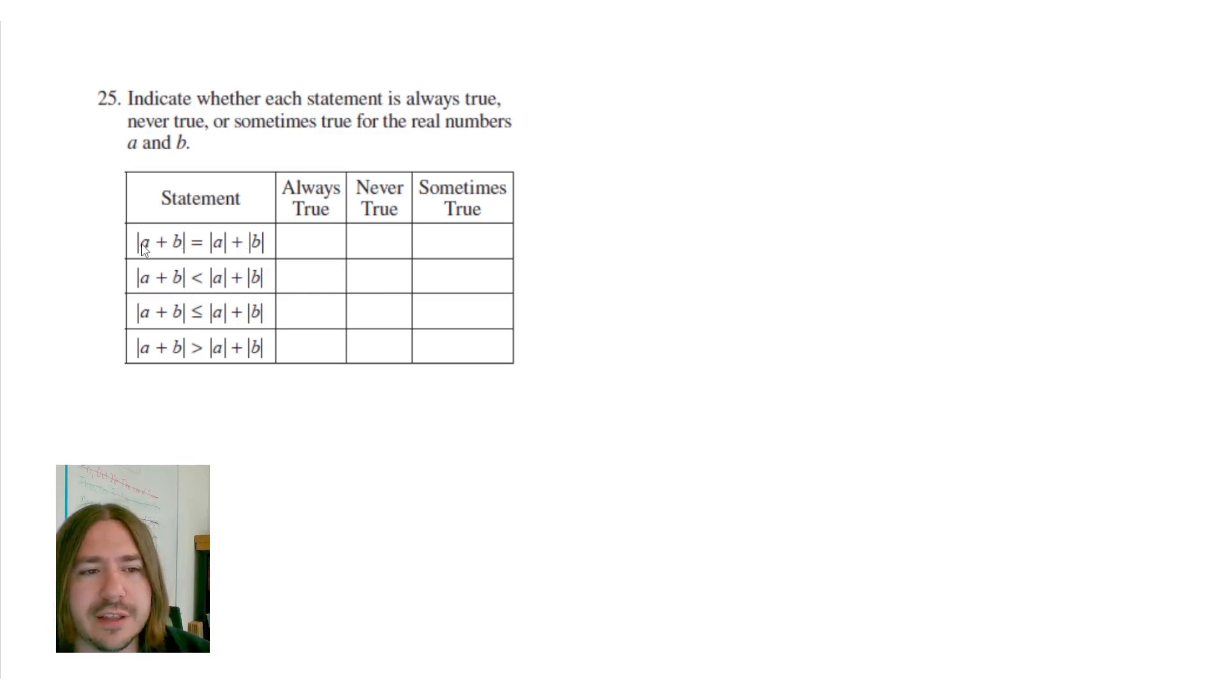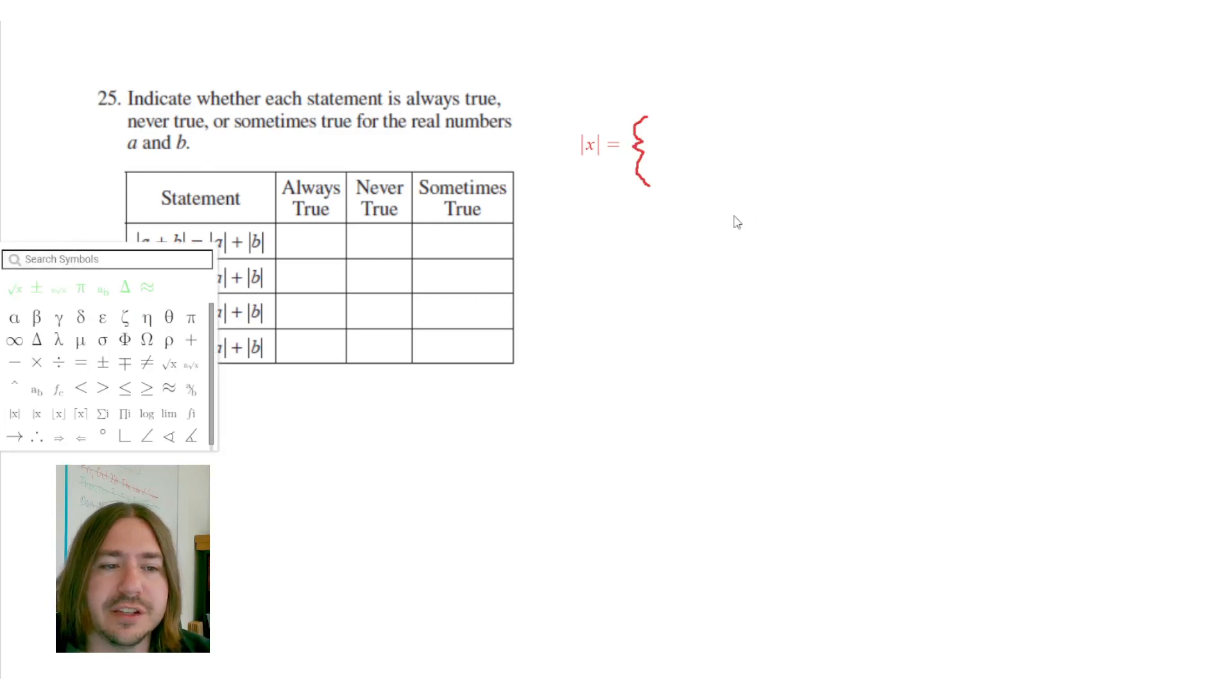The first one says the absolute value of A plus B. Just to give you a little bit of background here, whenever you have the absolute value of X, it will take whatever numbers inside the bars and make it positive. One way to define this is as a piecewise function, which basically means this function outputs something different depending on what you input.